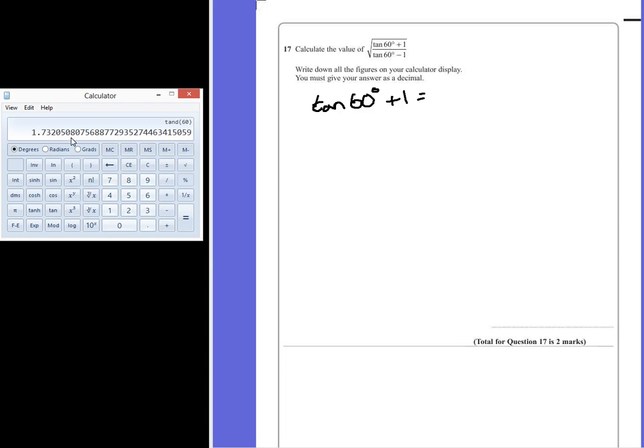So this gives me 1.732 to 3 decimal places. If I add 1 that's going to give me an answer here of 2.7320508. At this point you know this will keep going. Your calculators are probably slightly less accurate than this one. But it's a good idea just to write it down.